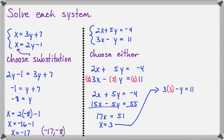Now we plug the 3 into the x place in either equation, and I chose the bottom one again. So 3 times 3 minus y equals 11, so 9 minus y equals 11, so negative y equals 2 and y equals negative 2, and our solution is 3 comma negative 2.